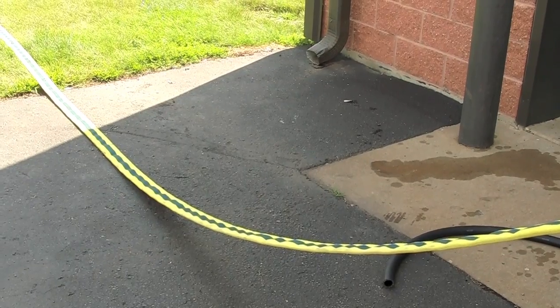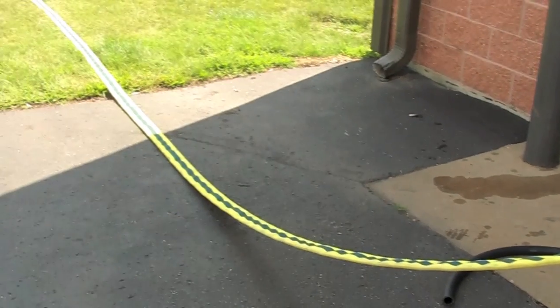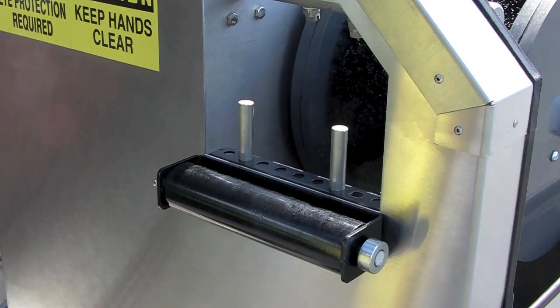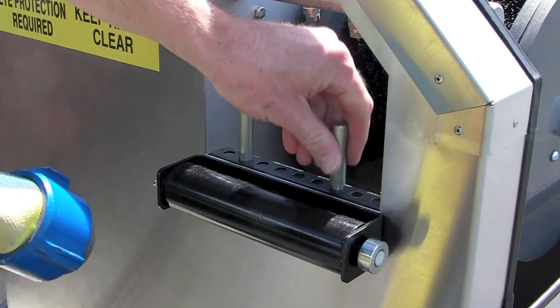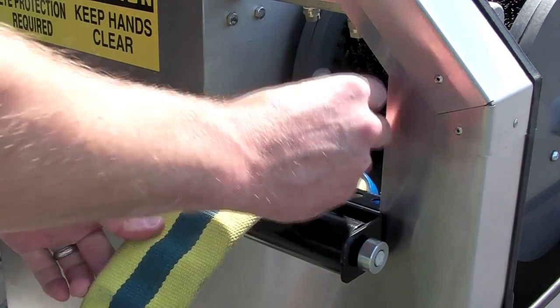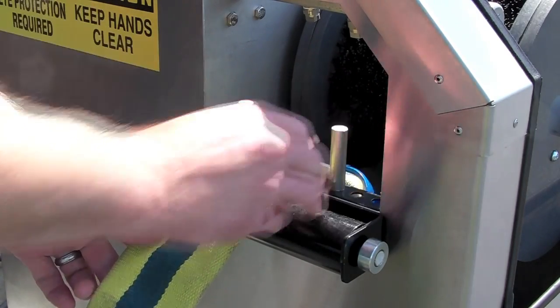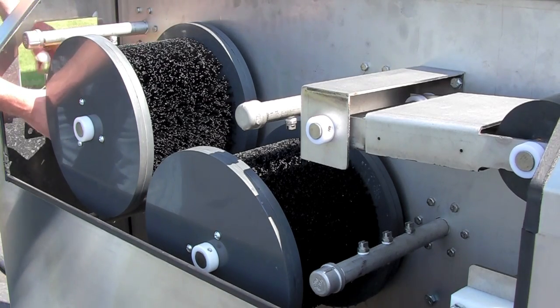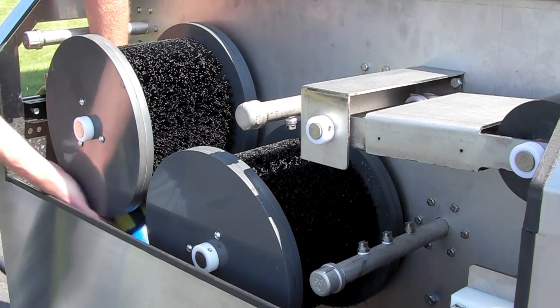Begin by rolling the hose out to the left of the washer with the male end facing the washer. Set the indexing pins to where the hose will line up with the middle of the hose brush. Remove one indexing pin and set the hose into the hole, replacing the indexing pin when done.